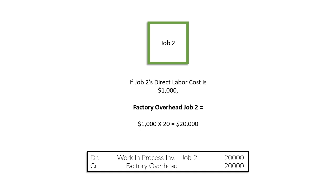So what we're doing now is applying overhead by crediting the factory overhead account — taking away from it — and transferring that cost into the jobs using our POHR. To summarize: first we transferred indirect costs into the factory overhead account; now we're transferring costs from the factory overhead account and putting it into the jobs. That way we have data for how much we spent on direct labor, direct material, and factory overhead for each individual job.